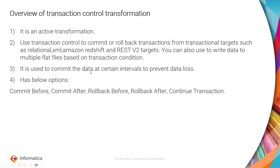Transaction Control is also used to commit data at certain intervals to prevent data loss. It has the following options: commit before, commit after, rollback before, rollback after, and continue transaction. Commit before means you commit whatever transaction happened and then open a new transaction. Rollback before rolls back the previous transaction and then opens a new transaction. Using commit before or rollback before means for 100 records there will be 100 transactions.